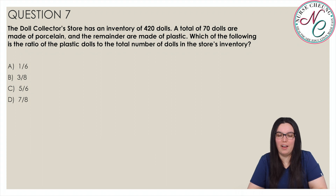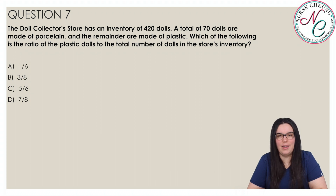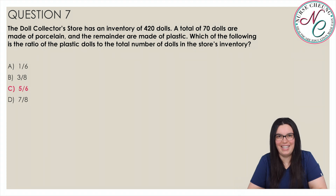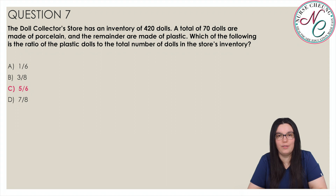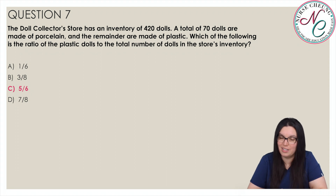Question 7. The doll collector's store has an inventory of 420 dolls. A total of 70 dolls are made of porcelain and the remainder are made of plastic. Which of the following is the ratio of the plastic dolls to the total number of dolls? Is it A, one-sixth; B, three-eighths; C, five-sixths; or D, seven over eight? The correct answer is C, five-sixths. We subtract 70 from 420 to get 350 plastic dolls. The ratio 350 over 420 reduces to five-sixths.